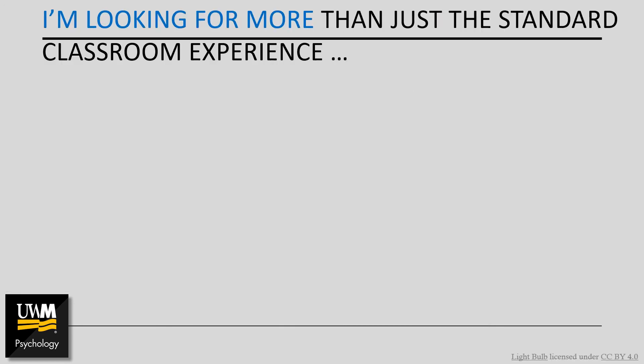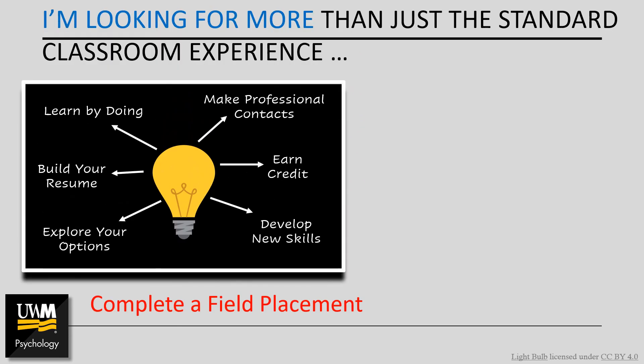Some opportunities that set UWM apart involve stepping outside of the traditional classroom setting. If you're looking for something more than the standard classroom experience, you might consider completing a field placement, which is our version of the internship. Field placements are a great way to get some real-world experience with a community organization or non-profit that has a mission consistent with your career preferences. You can complete a field placement as early as your freshman year, and if you find that the work didn't match your expectations, you can re-enroll and try something else. Freshmen and sophomores enroll in Psych 292, juniors in 692, and seniors in 697. To enroll, you must identify a placement site — we have suggestions listed on our website and I send out messages to students when I hear about relevant opportunities. Ultimately, you want to identify a placement site that matches your interests, which is why we leave that part up to you.